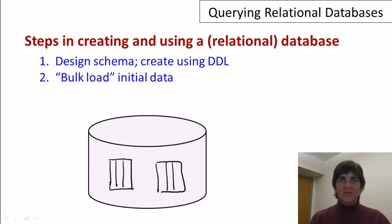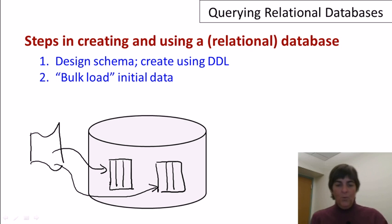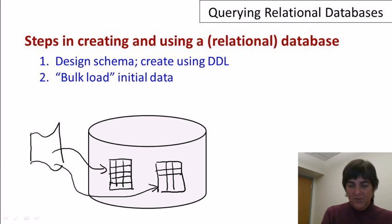Once that's ready, the next step is to load up the database with the initial data. So it's fairly common for the database to be initially loaded from data that comes from an outside source. Maybe the data is just stored in files of some type, and then that data could be loaded into the database. Once the data is loaded, then we have a bunch of tuples in our relation.